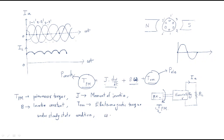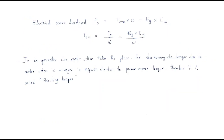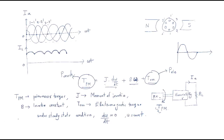Under steady state, d-omega/dt becomes zero because steady state means constant speed. So that term becomes zero and the remaining equation is: prime mover torque equals b*omega plus electromagnetic torque. If we multiply both sides by omega, then prime mover torque times speed equals b*omega-squared plus electromagnetic torque times speed.